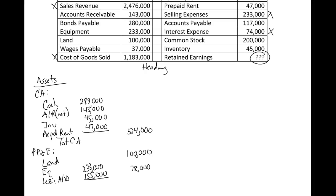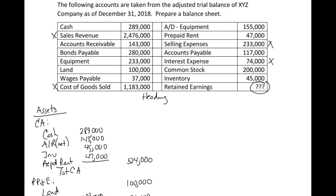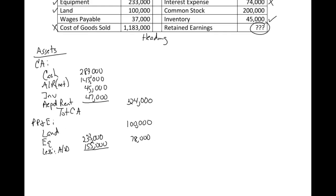That takes care of all of our assets. Let's go back up to the problem and check off what we've used: cash, accounts receivable, bonds payable as a liability, equipment and land, wages payable as a liability, accumulated depreciation, prepaid rent, accounts payable as a liability, common stock as equity, inventory, and retained earnings as equity. It looks like we're in good shape. Our total assets work out to $702,000.